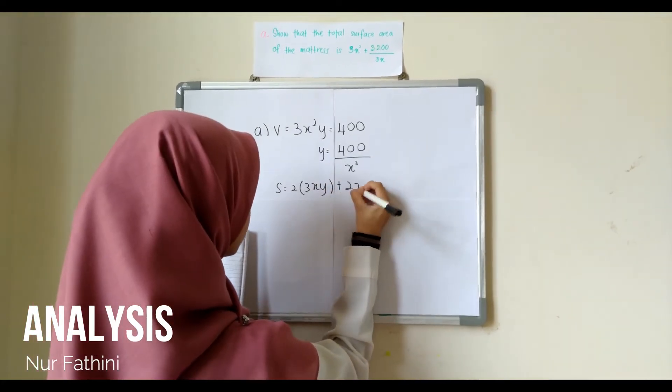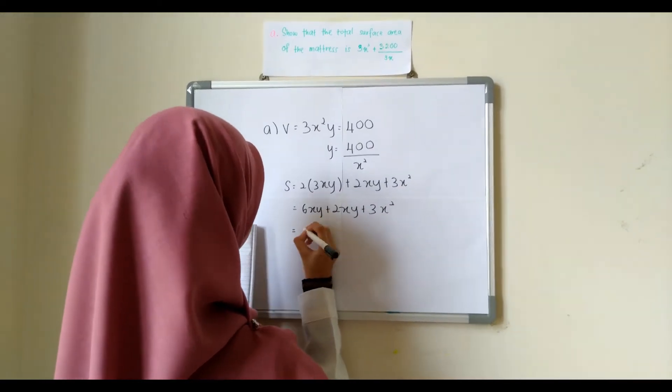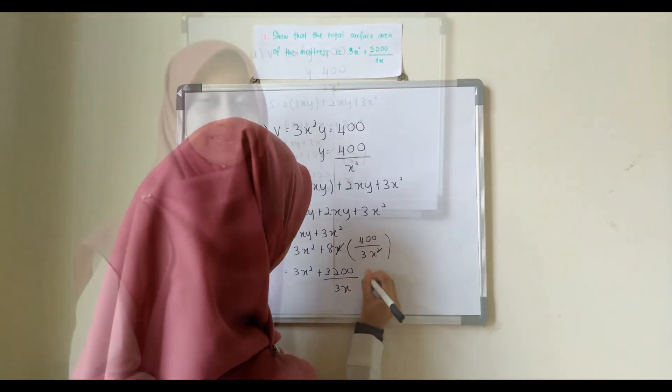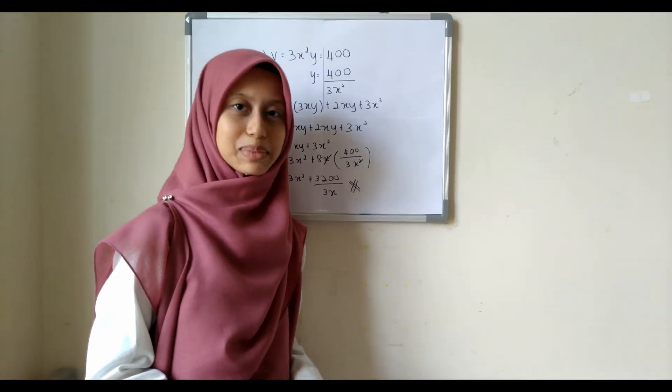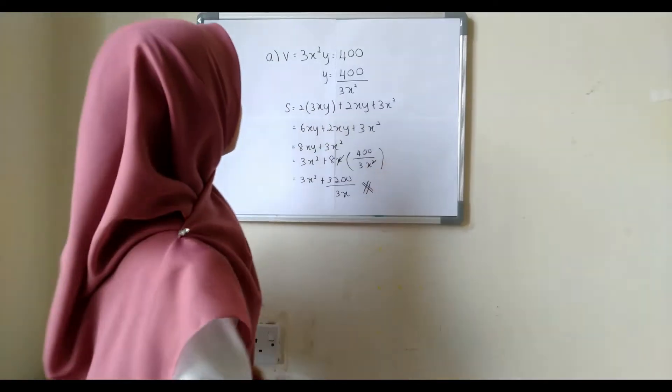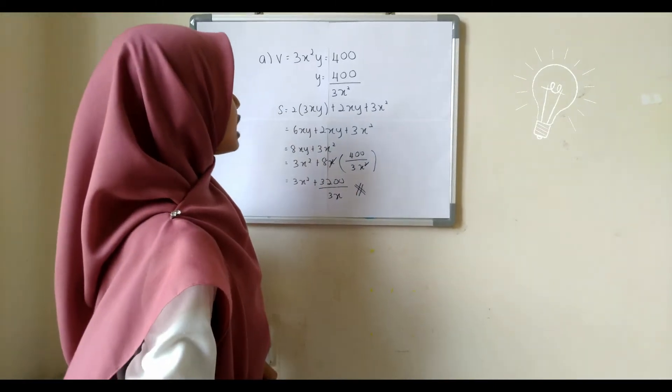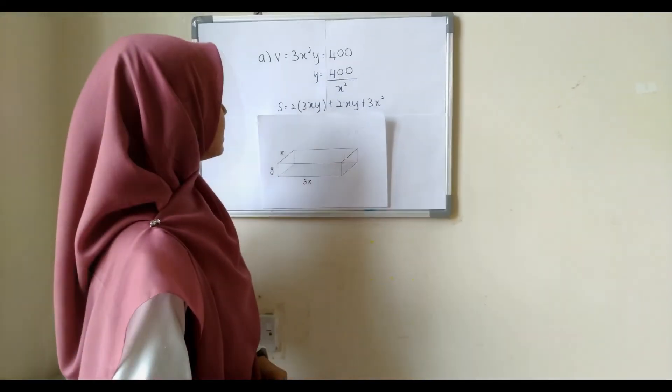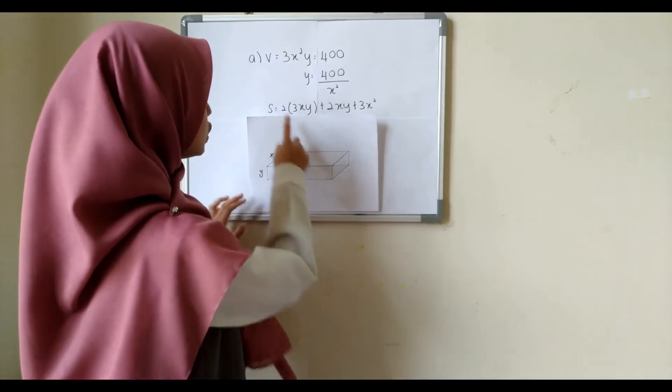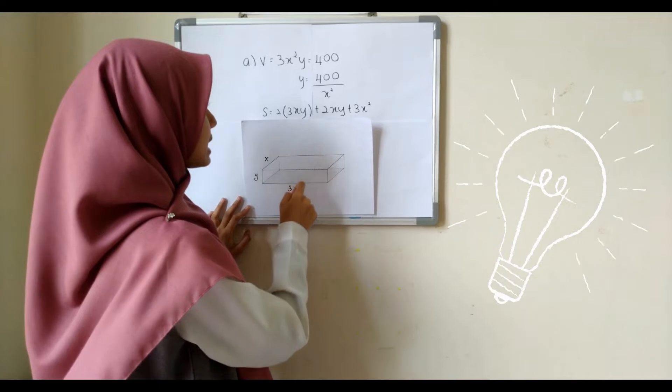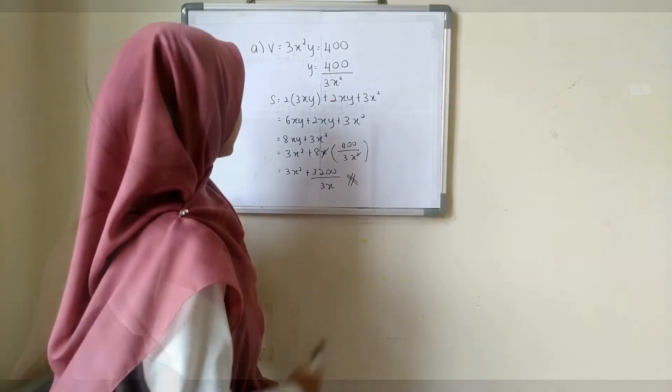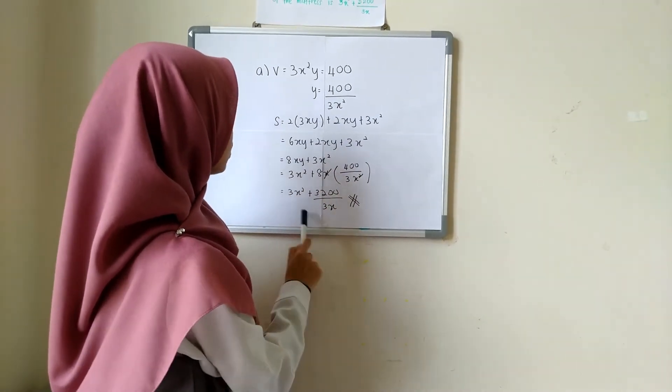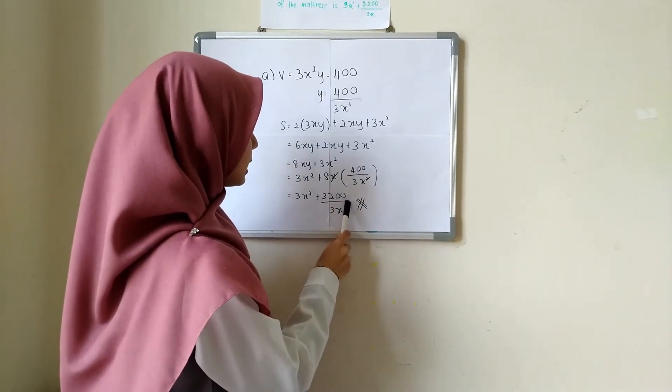My name is Nurfatini Binti Ismail and today I'm going to show you the calculation for question A. First, we can find the volume by using 3x squared times y equal to 400. From this equation, we can get the value of y, 400 divided by 3x squared. The total surface area of the mattress can be computed by 2 times 3x times y plus 2 sides of x times y plus 1 side of 3x squared. We will get 8xy plus 3x squared. We will substitute the value of y with 400 divided by 3x squared and it is shown that the total surface area of mattress is 3x squared plus 3200 divided by 3x.